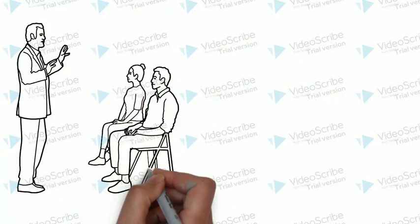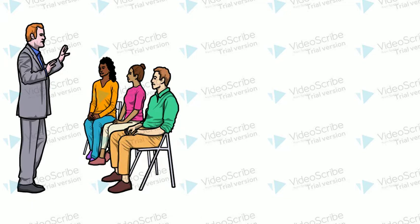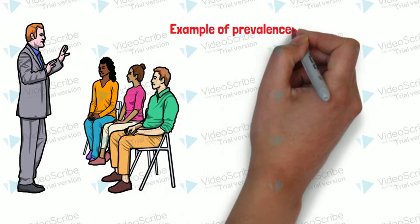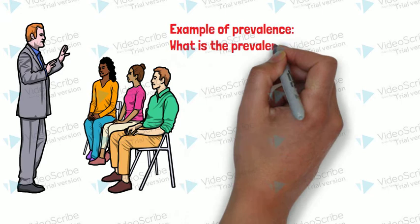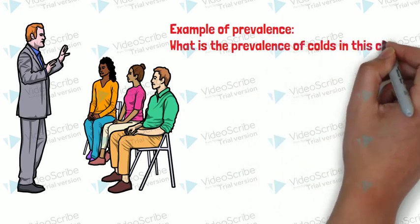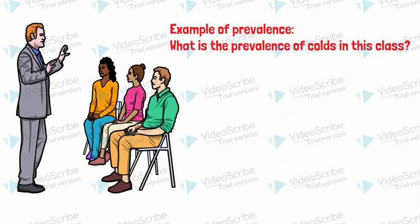Example of prevalence: What is the prevalence of common cold in this class? If the number of cases, that means people with common cold in the class among 30 students, is 3...